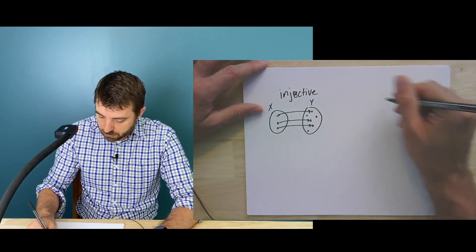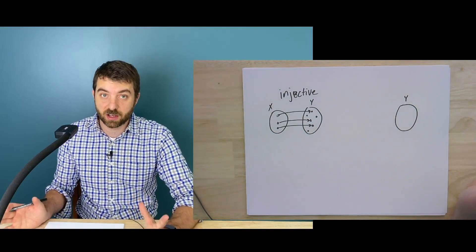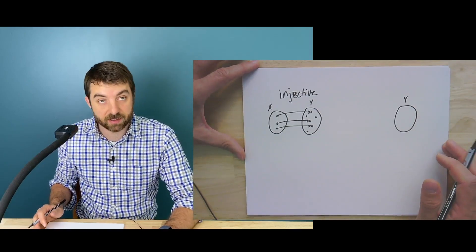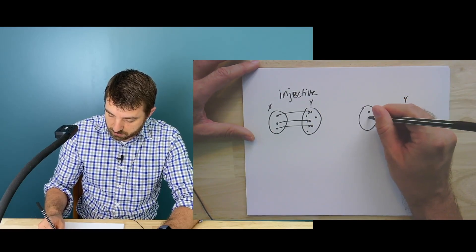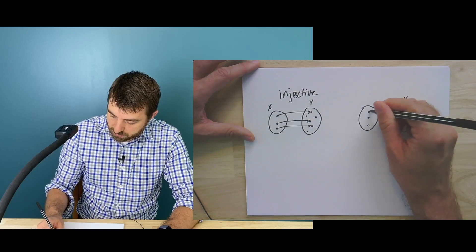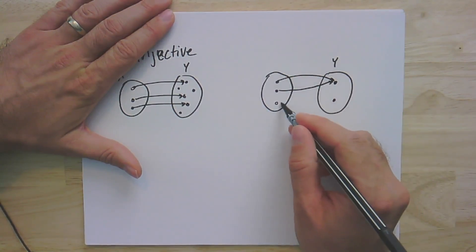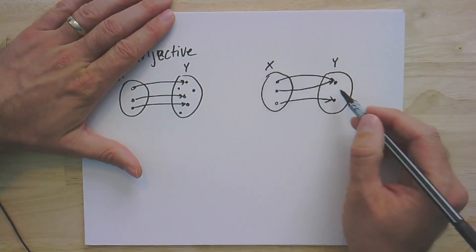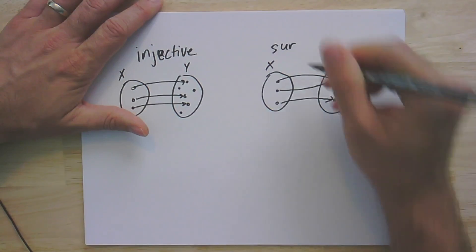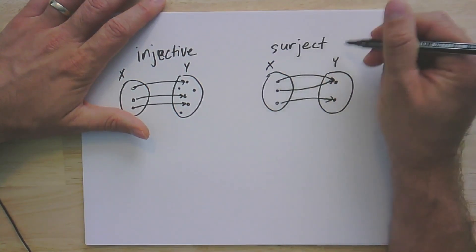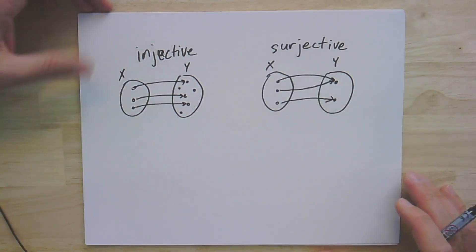If it is the case that every element of the co-domain is the image of some element in the domain under the function, then that would be called surjective. So let's draw a picture: here everybody in X maps to somebody in Y — that's what it means to be a function — but in this case every element of Y is equal to f(x) for some x. So that would be a surjective function.